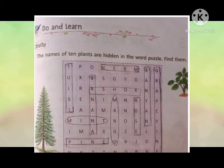Banyan: B-A-N-Y-A-N — banyan tree hota hai na? So Banyan, you have to circle this word. Phir next hai Grapevine: G-R-A-P-E-V-I-N-E. Grapevine.